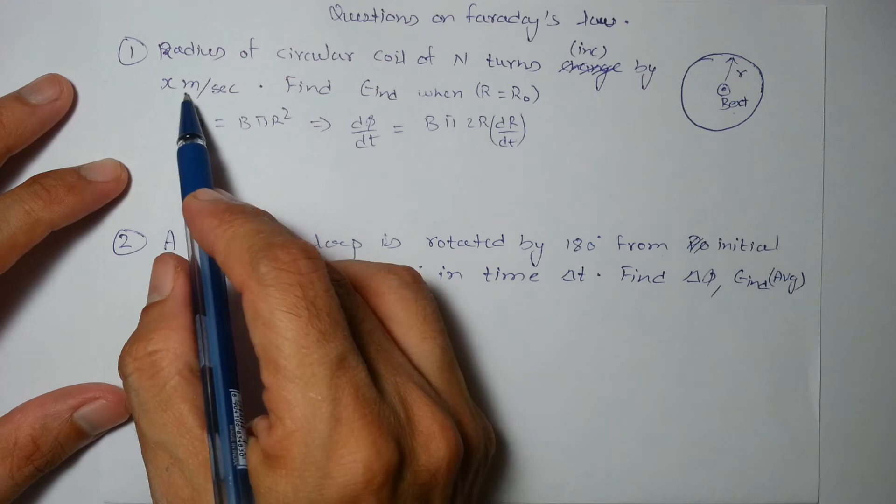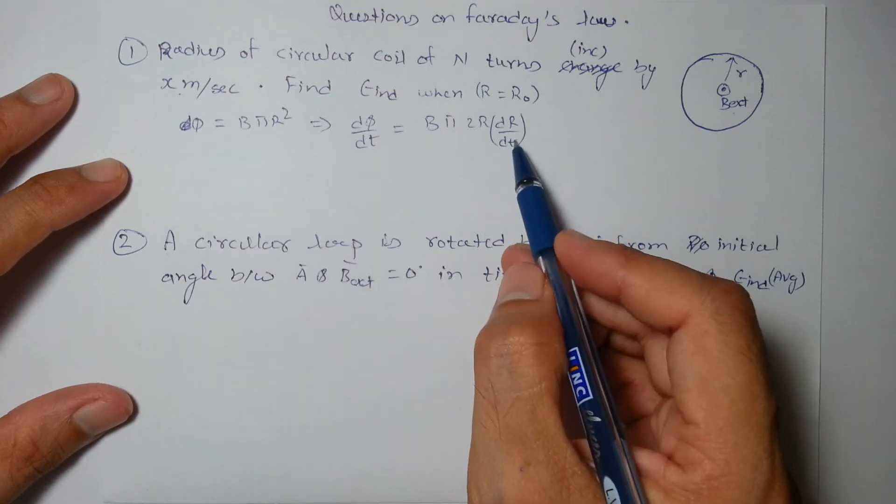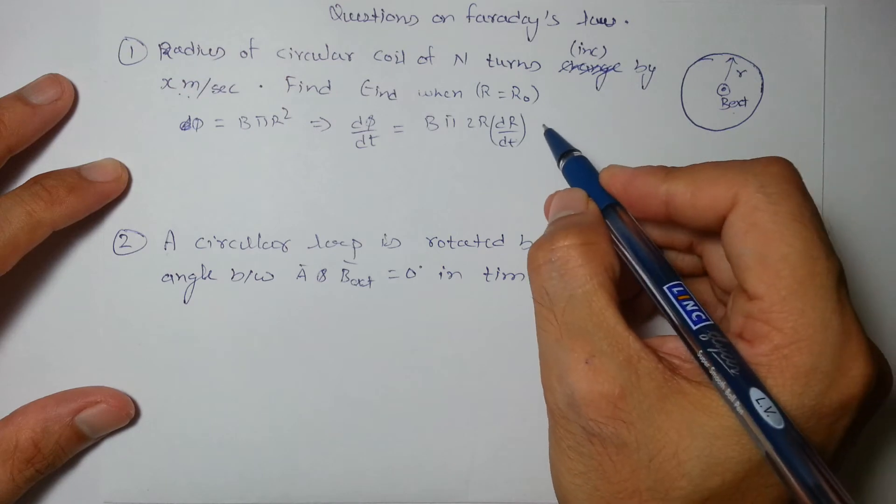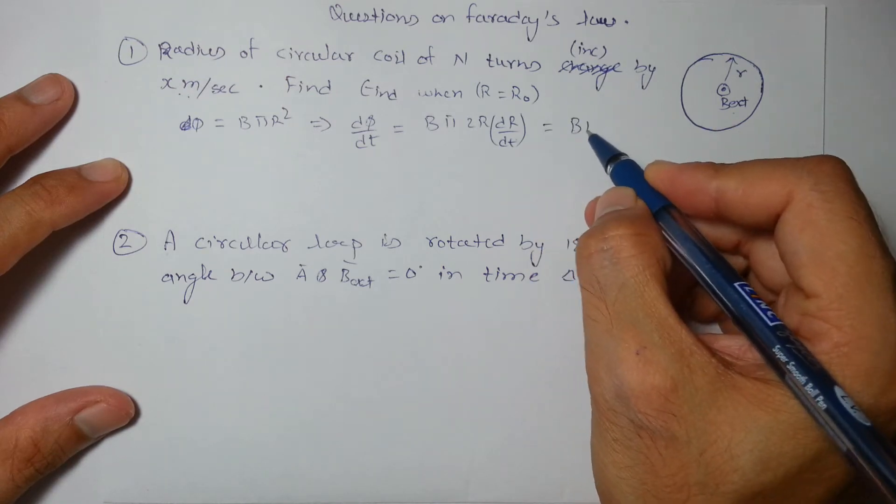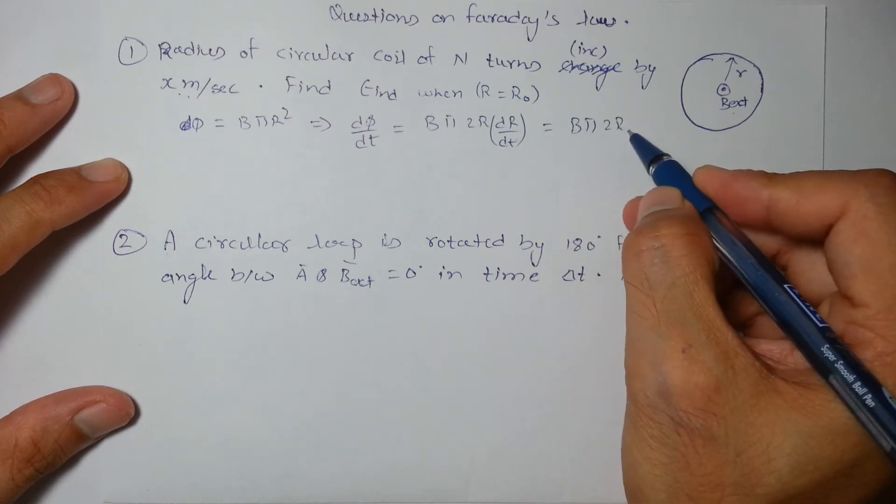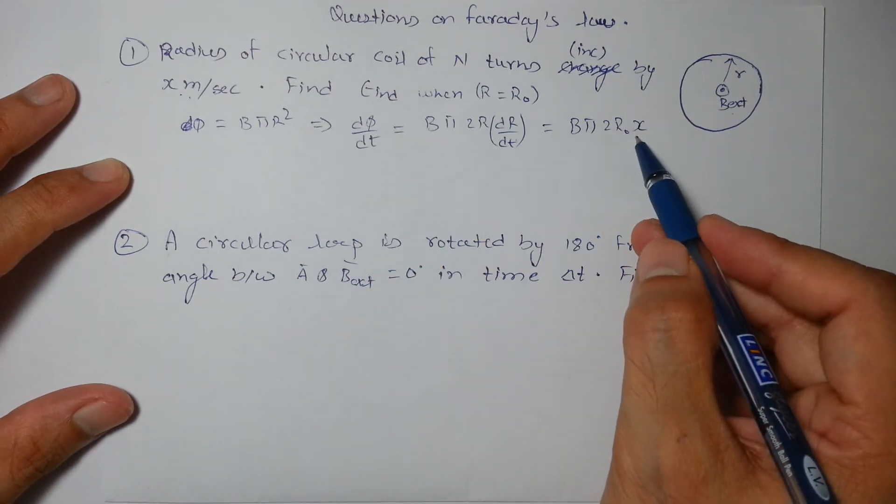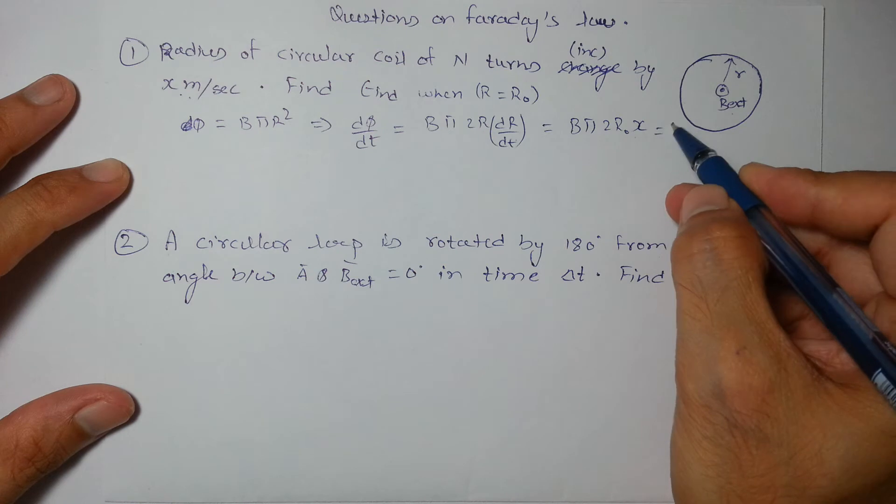So this is given as x, the rate of change in radius is given as x and the value of radius is r0. So it will become B into 2 pi into 2 r0 into x. So that is the flux rate of change in flux which is equal to the EMF induced.